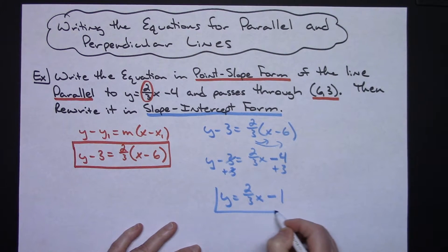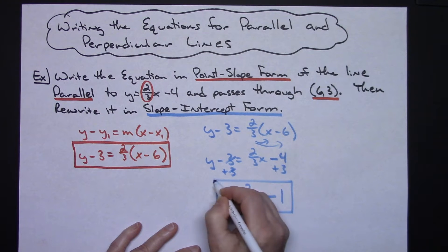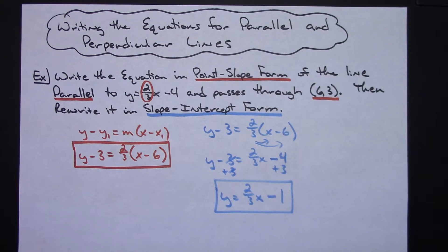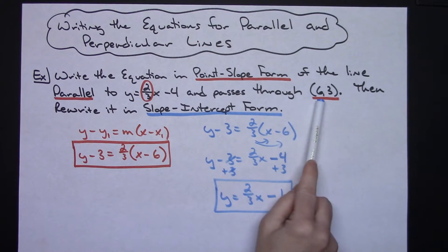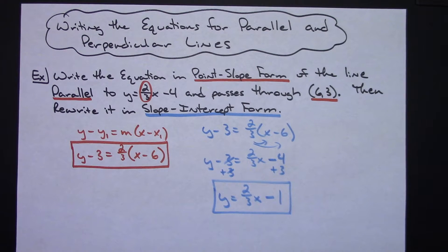And this is going to then be the slope-intercept form of that same equation, same line, which is parallel to the original given equation and goes through the point (6, 3).